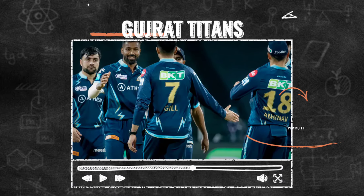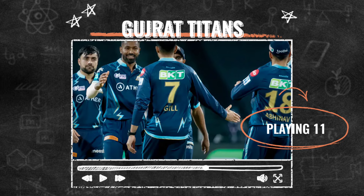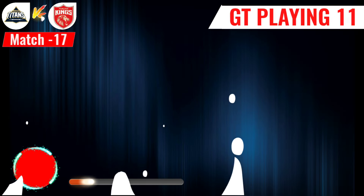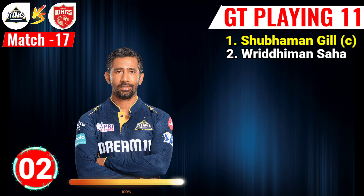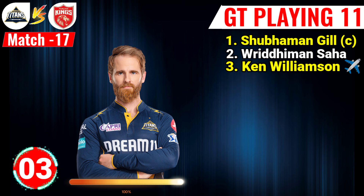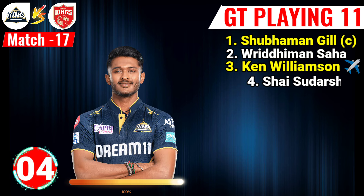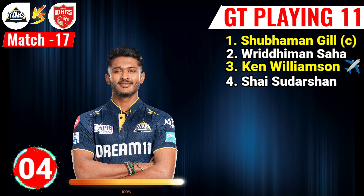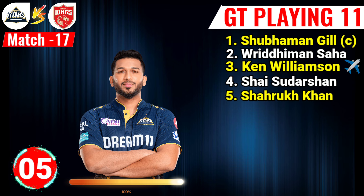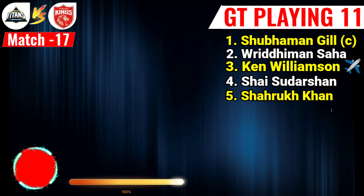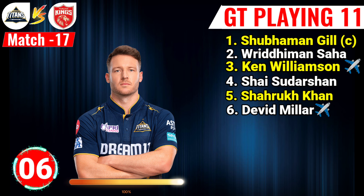Team Gujarat Titans final playing 11. No. 1 Shubman Gill, right-hand batsman and captain. No. 2 Wriddhiman Saha, right-hand batsman. No. 3 Vijay Shankar, right-hand batsman. No. 4 Sai Sudarshan, left-hand batsman. No. 5 Azmatullah Omarzai, right-hand batsman. No. 6 David Miller, left-hand batsman.